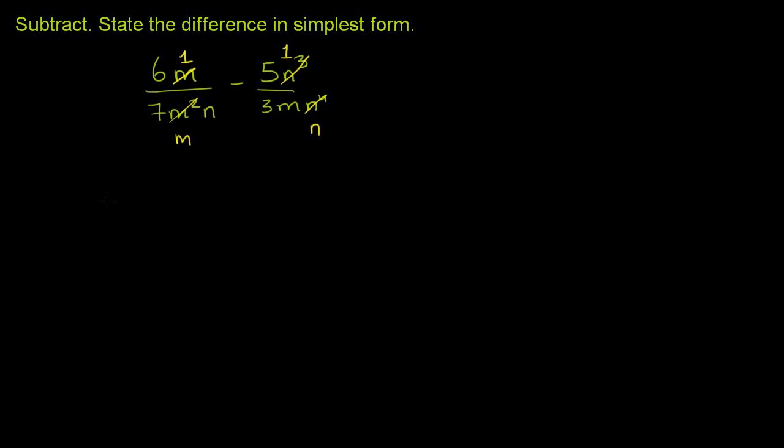So we can rewrite this as 6 over, 6 times 1 is just 6, 6 over 7mn minus 5, because that's just 5 times 1, over 3mn. And this really simplifies the problem.